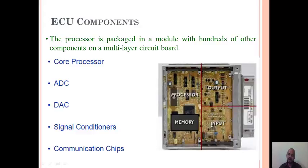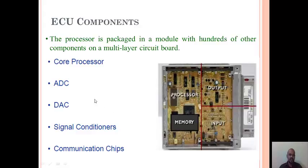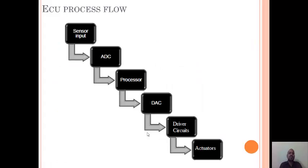For braking system inputs, the brake pedal and wheel speed sensors are used, with solenoids as outputs. The number and type of inputs and outputs vary from system to system. The processor is packaged in a module with hundreds of other components on a multi-layer circuit board. Other than the core processor, the ECU contains an analog-to-digital converter (ADC), digital-to-analog converter (DAC), signal conditioner units, and communication chips.